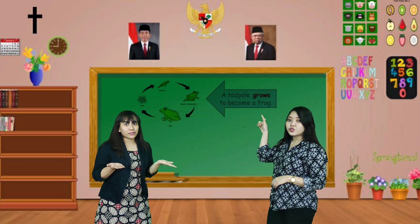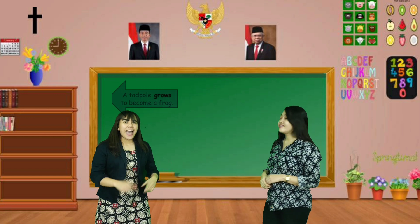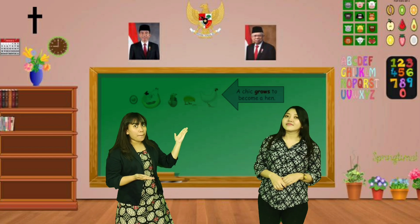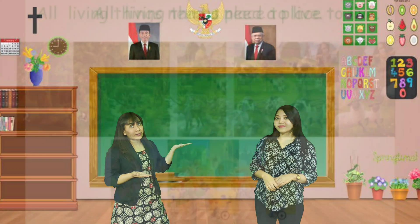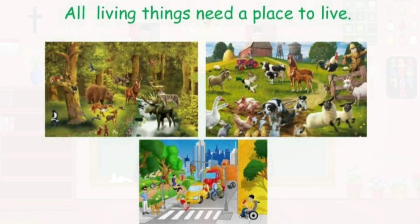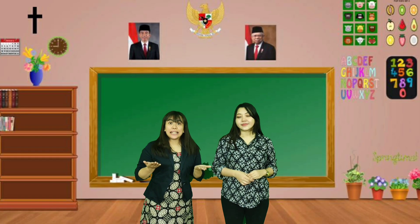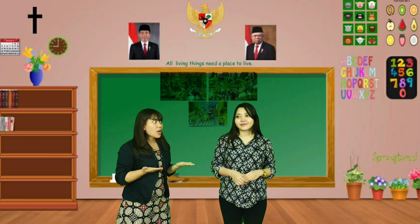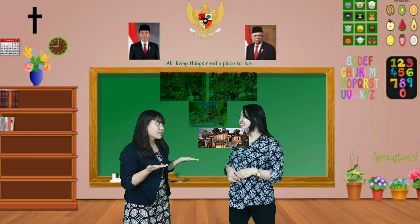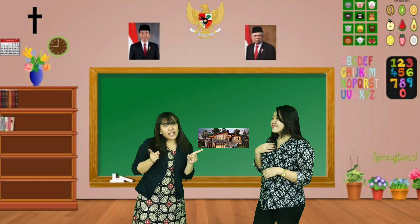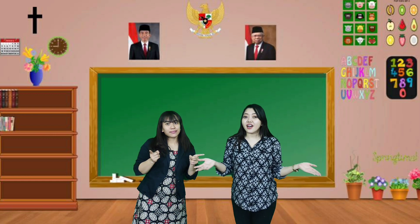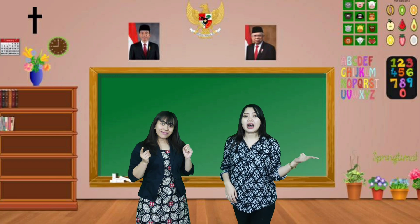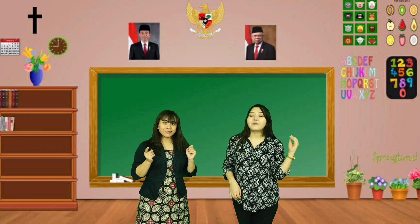A tadpole grows to become a frog. And last, a sheep grows to become a hen. All living things need a place to live. Where do you live, Miss Alice? I live in a house. How about animals? Animals live everywhere — like in the jungle, forest, mountains, rivers, and many more.